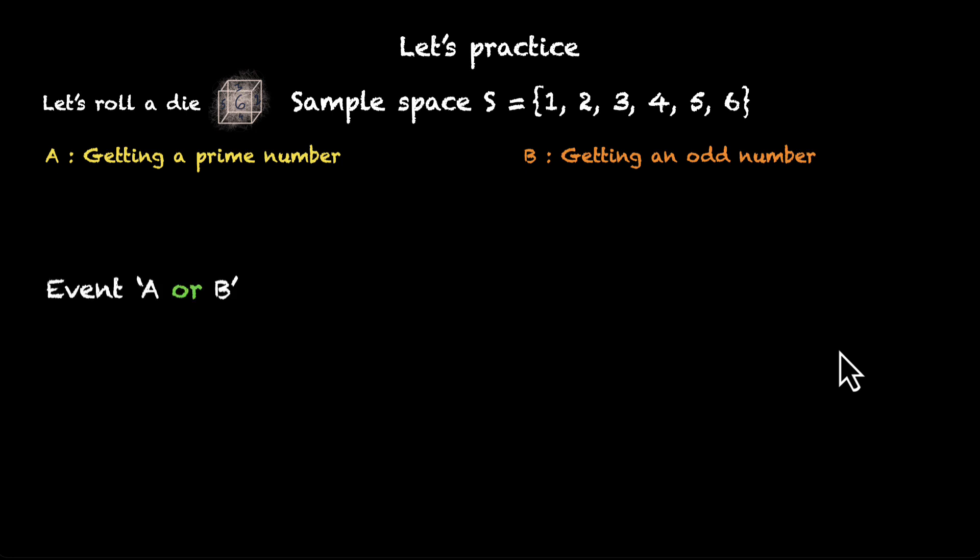Now, you'll have to figure out what will event A or B look like, event A and B look like, and event A but not B look like. Pause the video. Try this out for yourself.